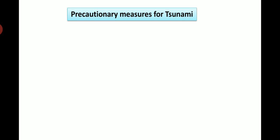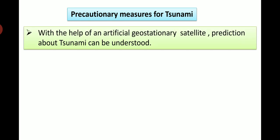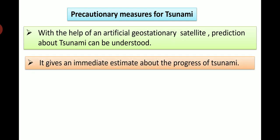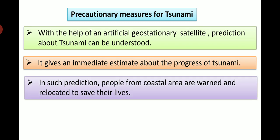Now precautionary measures for tsunami. What precautions we can take to protect from tsunami? First, with the help of an artificial geostationary satellite, prediction about tsunami can be understood. It gives an immediate estimate about the progress of tsunami. In such prediction, people from coastal areas are warned and relocated to save their lives.